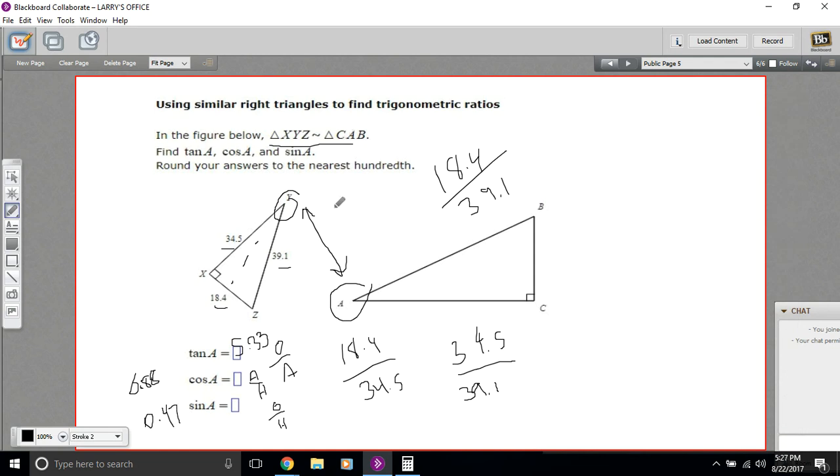So the trick there is that if you have a triangle that's similar to another triangle, all the trigonometric ratios are going to be the same. Just make sure you have the corresponding angles and set up the problems just as you normally would.